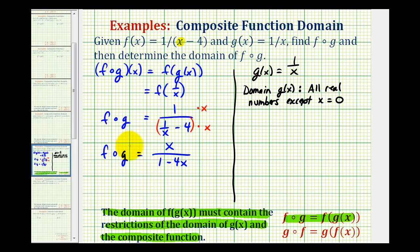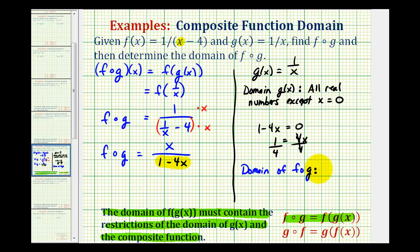Now that we have our composite function, we should recognize that we'd also have division by zero if one minus four x was equal to zero. So we have to determine what other values of x we must exclude. In addition to the restrictions from g of x, we need to know when one minus four x equals zero. Adding four x to both sides gives one equals four x, and dividing both sides by four gives x equals one fourth. So this value must also be excluded from the domain of the composite function, as it would cause division by zero. The domain of our composite function is all real numbers except x equals zero — from the domain of our inner function g of x — as well as x equals one fourth.